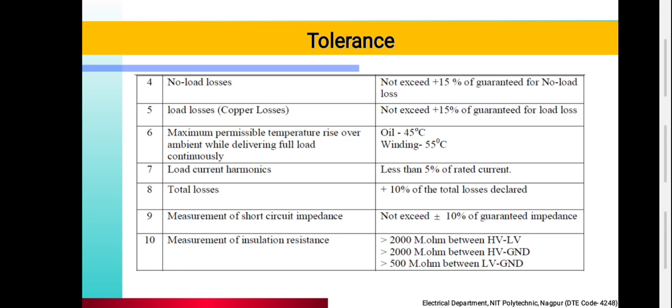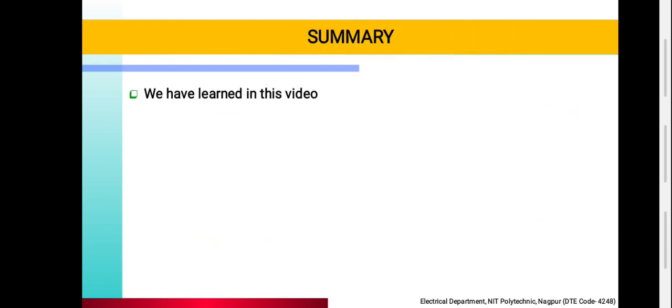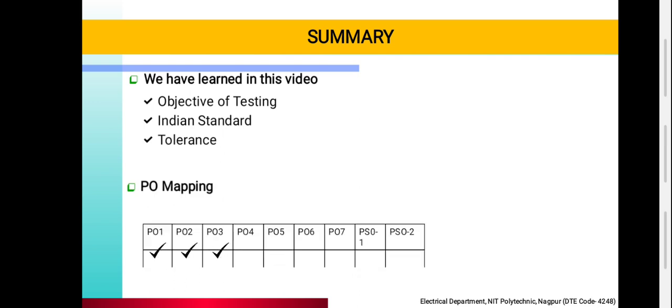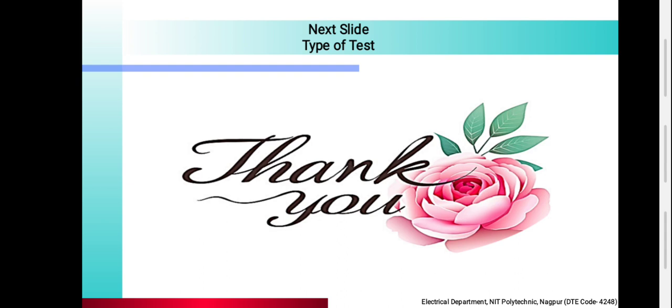Measurement of insulation resistance — आप देख सकते हो कि हर एक का एक range set है: high voltage to low voltage, high voltage to ground, low voltage to ground. Insulation resistance बहुत important है. So in this video, you have learned about the objective of testing, Indian Standard and tolerance. Next video will be on types of test. Thank you.